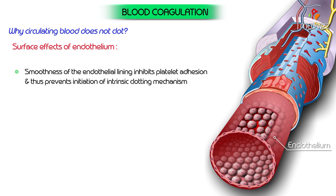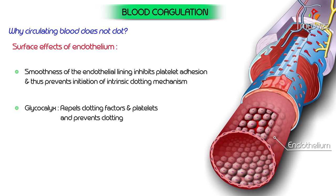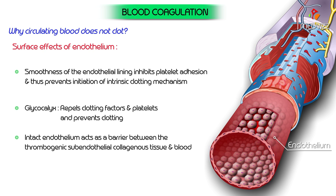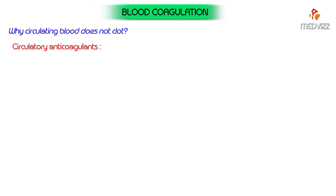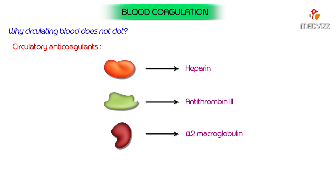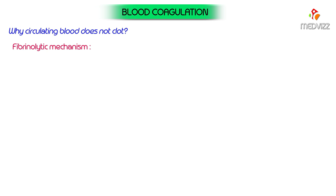Surface effects of endothelium: smoothness of the endothelial lining inhibits platelet adhesion, preventing initiation of intrinsic clotting mechanism. A layer of glycocalyx (a mucopolysaccharide) absorbed onto the inner surface of endothelium, being negatively charged, repels clotting factors and platelets, thereby preventing clotting. Intact endothelium acts as a barrier between thrombogenic subendothelial collagenous tissue and the blood. Circulatory anticoagulants — natural anticoagulants present in the blood — include heparin, antithrombin 3, alpha-2 macroglobulin, and protein C.